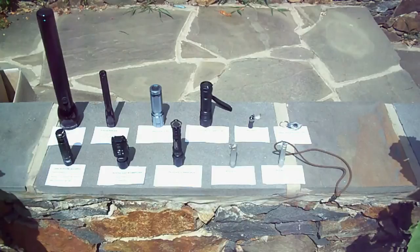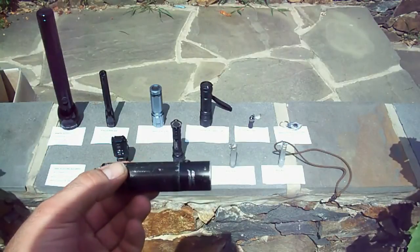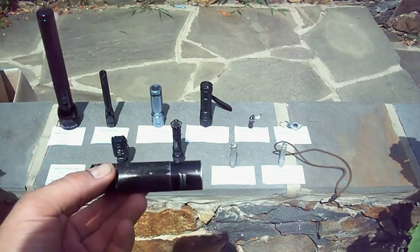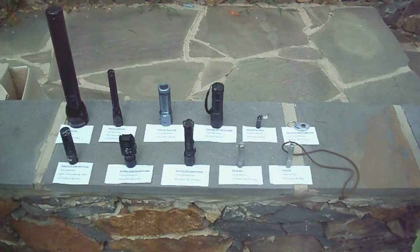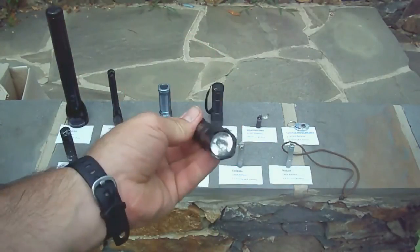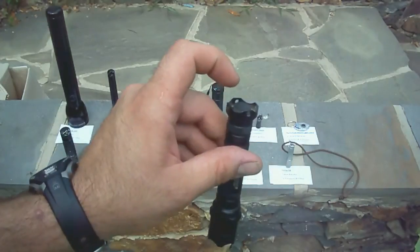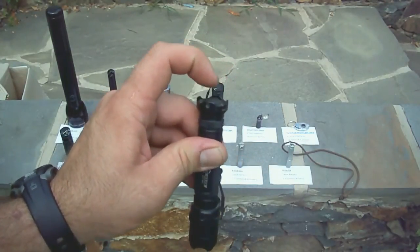Switches are the most prone part to fail in a flashlight. Like this Coast LED Lenser here, I can't tell you how many times this thing flickers on and off just because the switch is a piece of shit. An important feature of any switch I feel is the momentary mode. Instead of having to push all the way down and get a click for a constant on, a momentary operation means that you can tap the switch and get the light to flash.